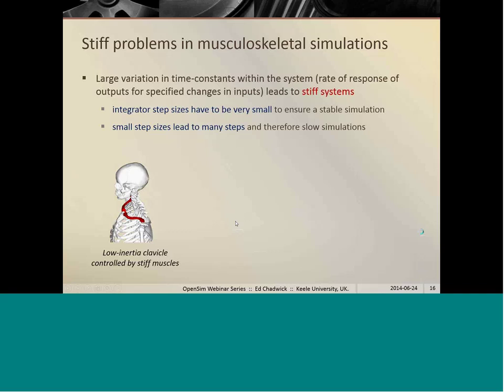Very low moment of inertia structure attached to fairly stiff muscles. That leads to very rapid changes in the output for very small changes in the input, a stiff system. So that means that when we're trying to perform a simulation, the integrator step sizes have to be very small in order to ensure a stable solution to the simulation. Those very small step sizes mean that we have to take very many steps, and therefore the overall simulation is very slow. So that's our first problem.